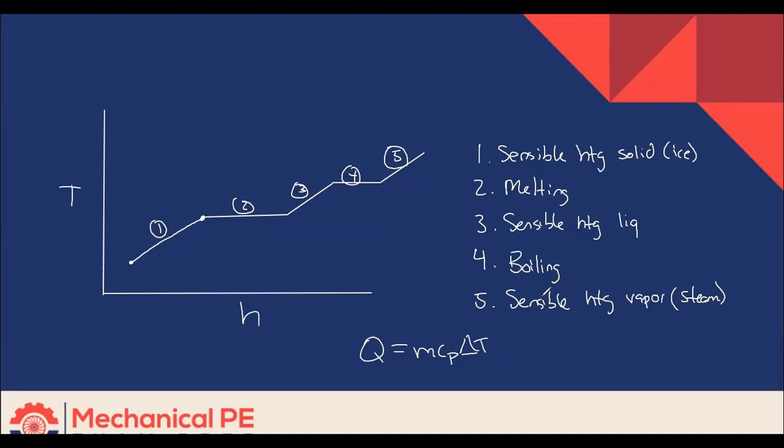On the other hand, two and four are governed by Q equals M HF, latent heat of fusion for melting and freezing. And boiling is governed by Q equals M HFG, latent heat of vaporization. Because we're evaporating as we go through process four.